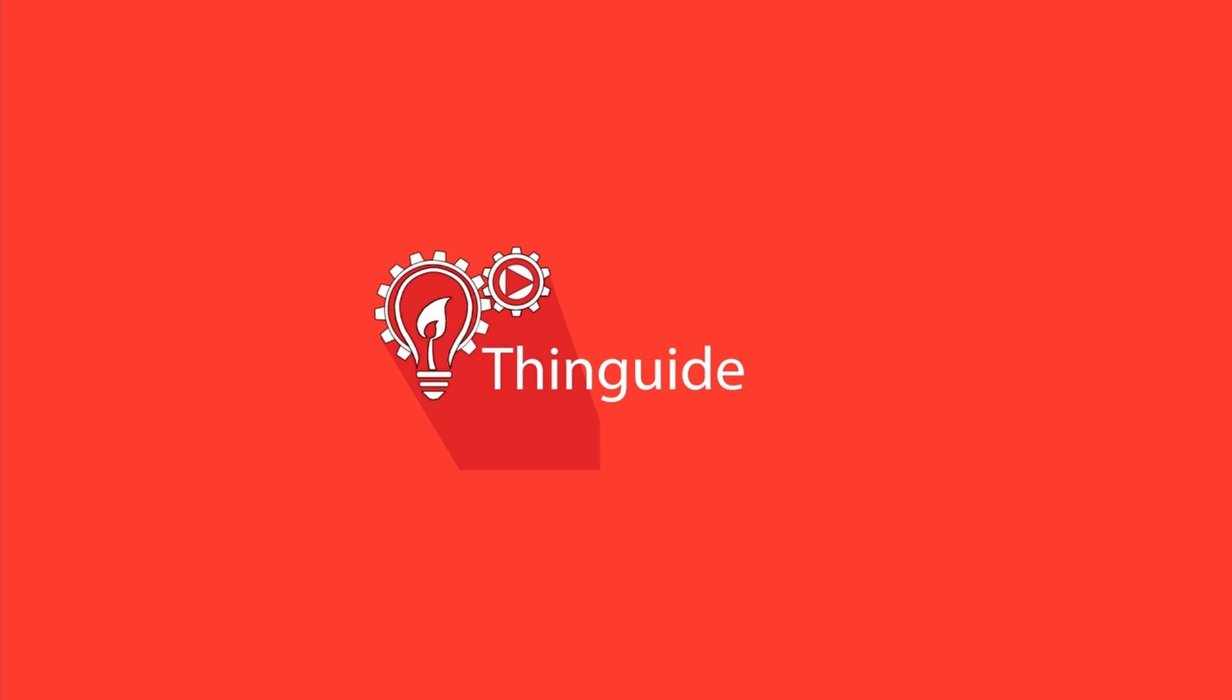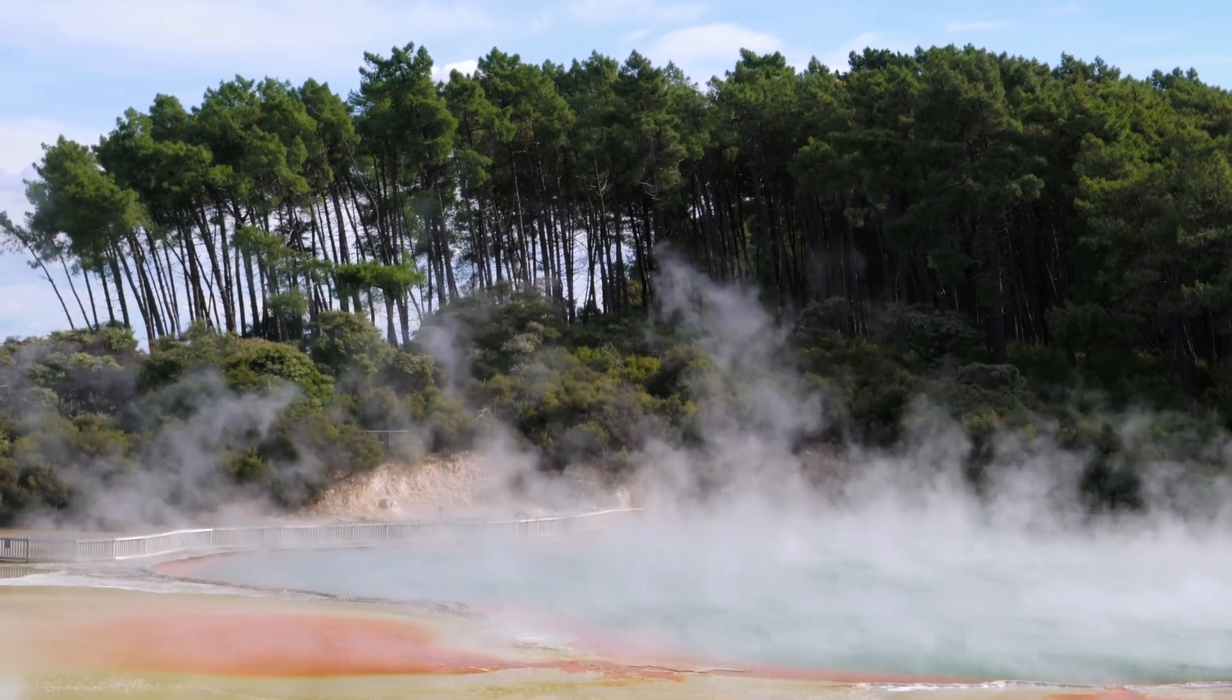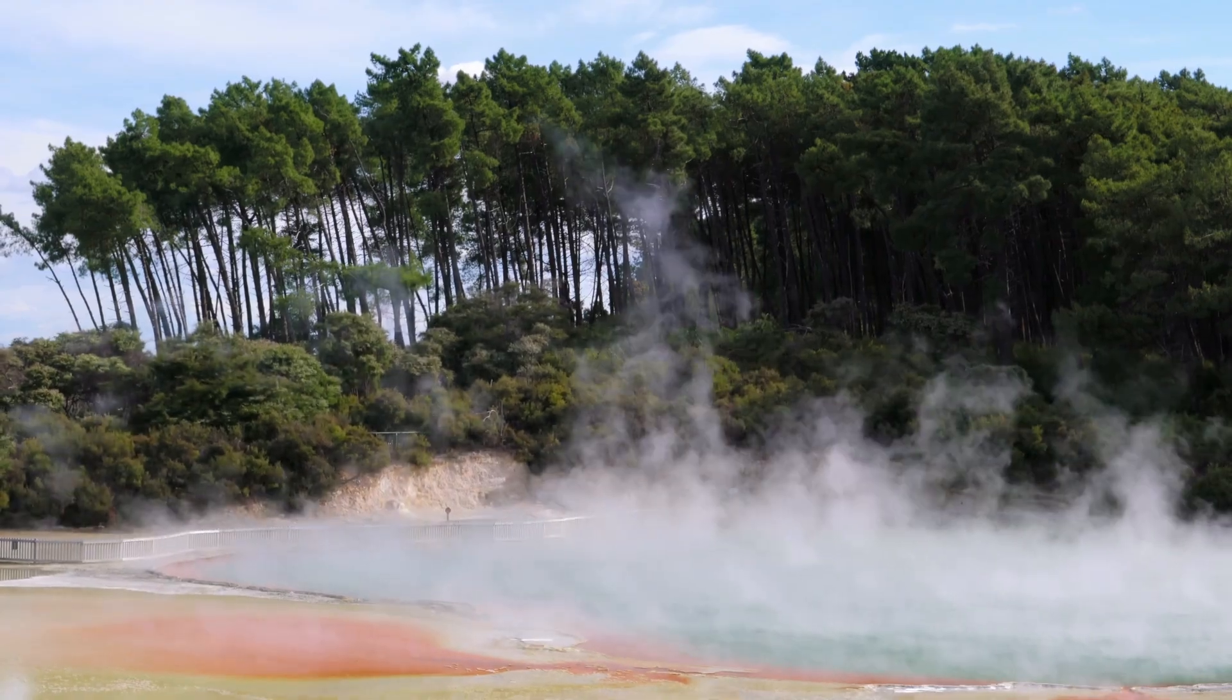Welcome to ThingEyed, the show where we learn the way things work. In this video we're going to learn about the two ways to vaporize water and how dryers are engineered to speed up drying. We will also compare the different types of dryers so you know which one is best for your needs. And finally we're going to discuss the history of dryer development.